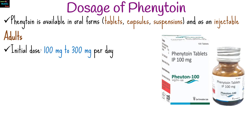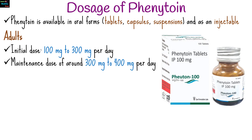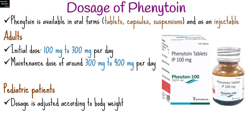For adults, the typical initial dose ranges from 100 mg to 300 mg per day, usually in divided doses. The dose is adjusted based on blood levels and clinical response, with a maintenance dose of around 300 mg to 400 mg per day. For pediatric patients, dosage is adjusted according to body weight, generally starting with 5 mg per kg per day.